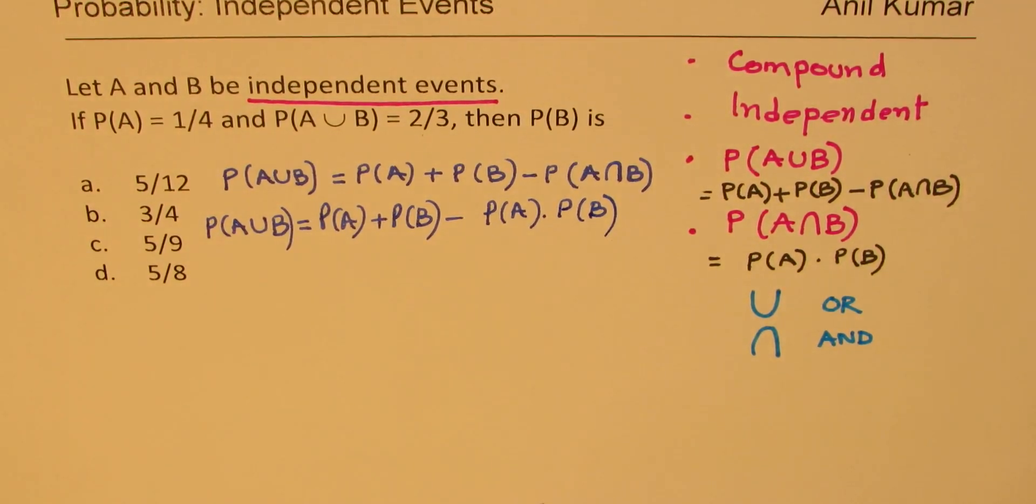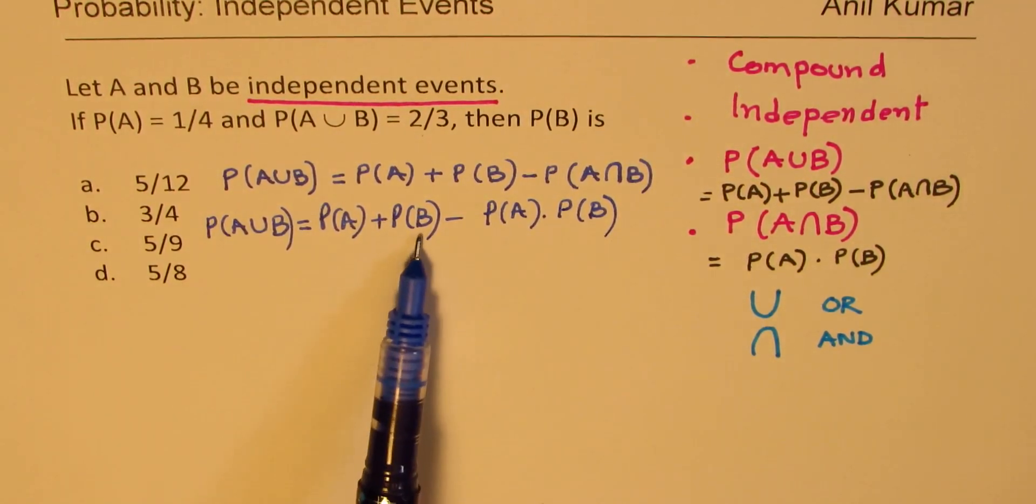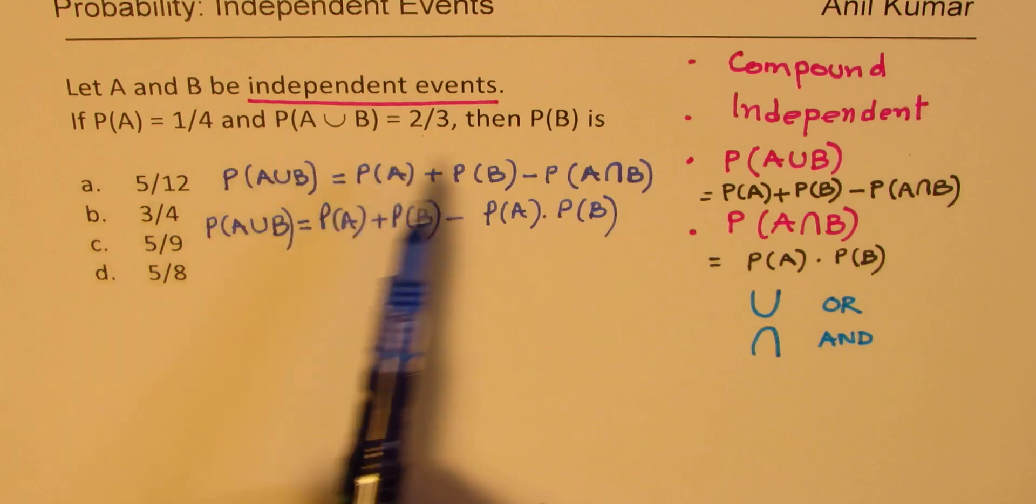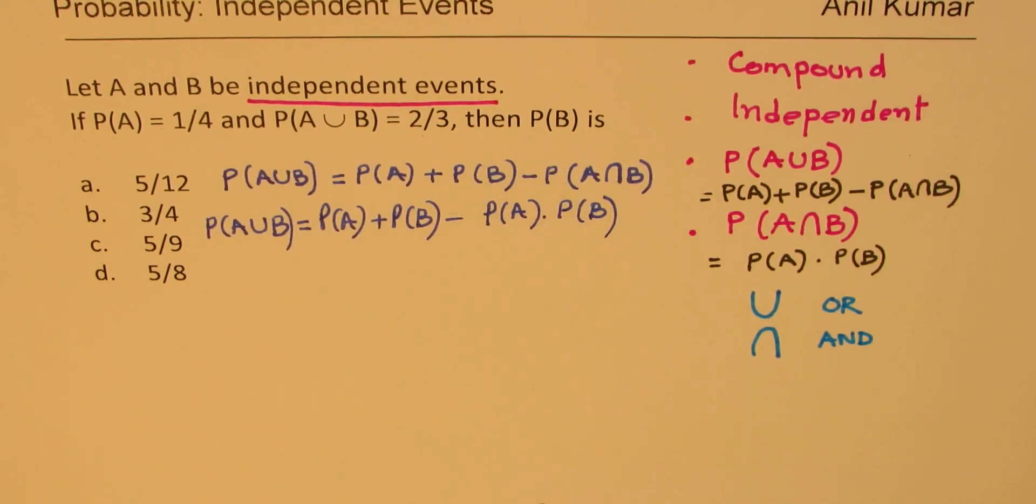You see very clearly that there is only one unknown here and that is what we are interested in finding, so you can easily find it. Does it make sense to you? Let's calculate this answer.